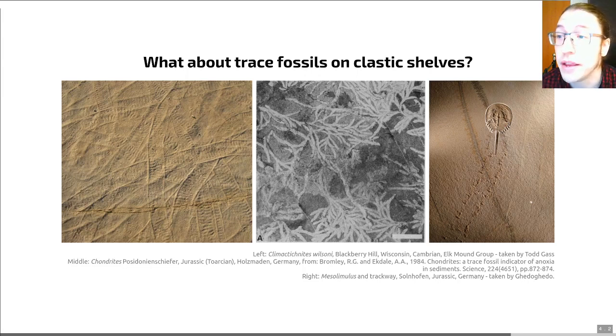Some traces on the odd occasion can be relatively easily associated with the trace maker, the animal that made those traces. In unusual examples such as this fantastic Ziphosurean or horseshoe crab from the Jurassic of Germany, you find the dead animal at the end of the trail. That allows you to say that trail was made by that animal. Of course, you then have to consider whether that animal was behaving strangely because it was about to die.